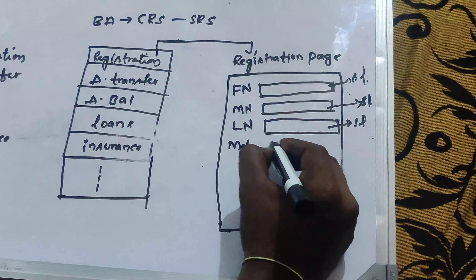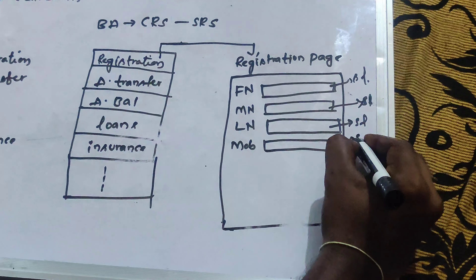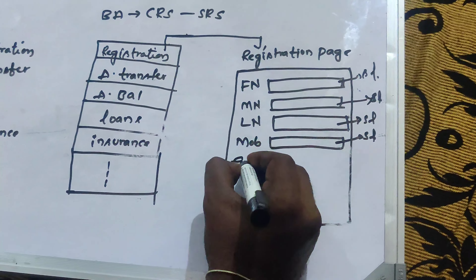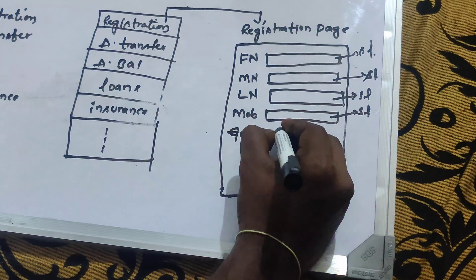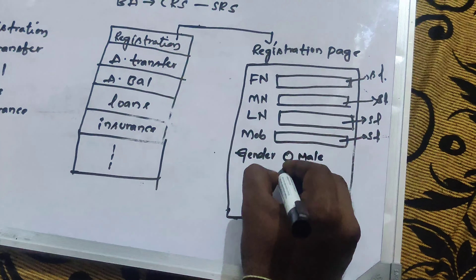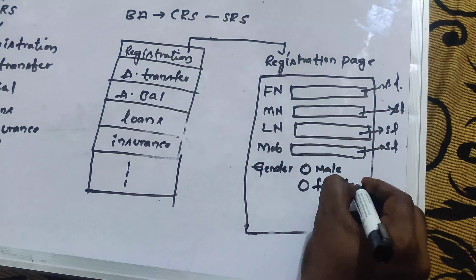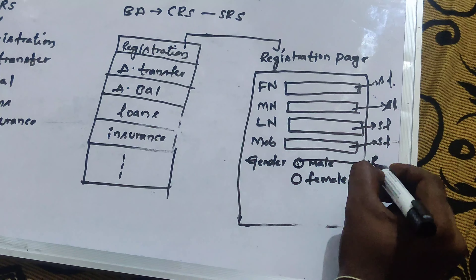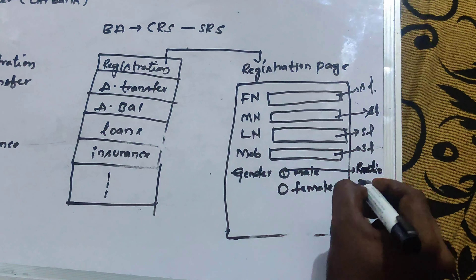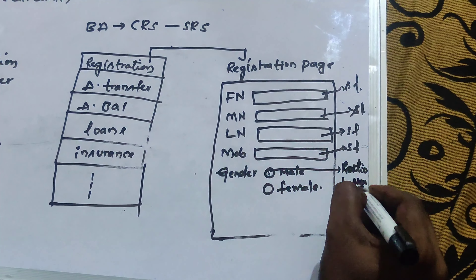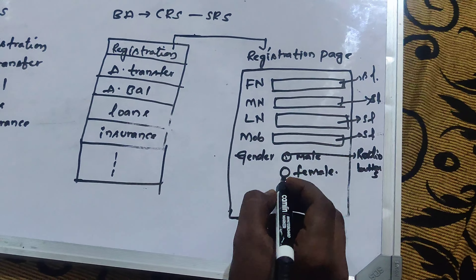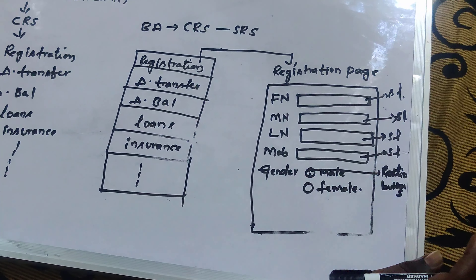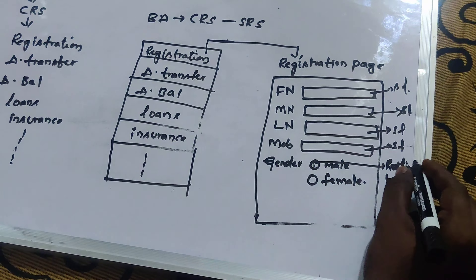The registration page also has a mobile number text field — again, text field is a software language term. Then for gender, we have male and female options; these circle shapes are called radio buttons, which is also a software language term. If you use radio buttons, you can choose only one option — you cannot choose two. That is called a radio button.